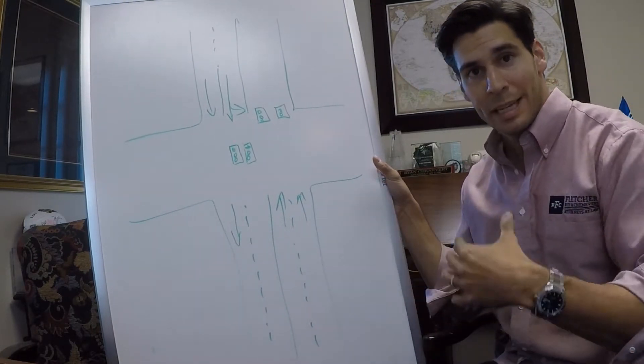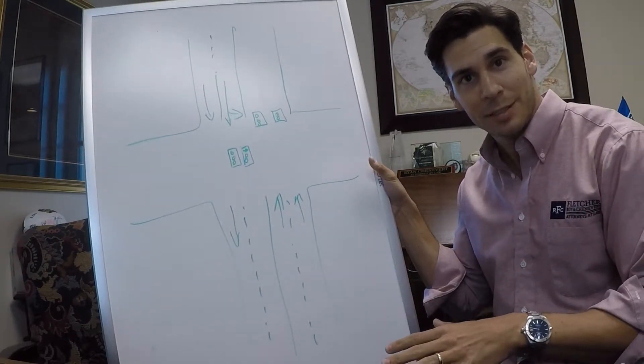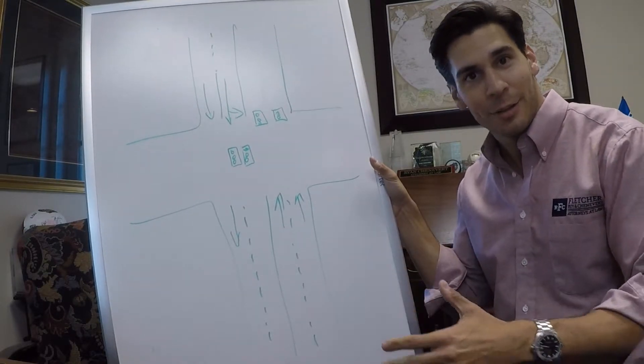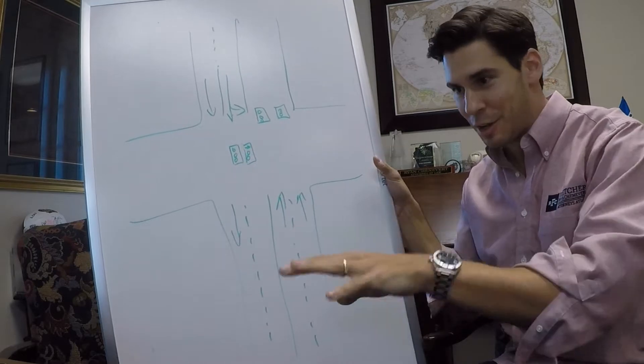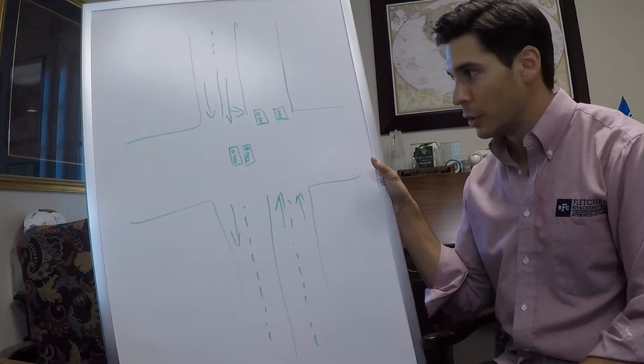So when we get it, it basically takes an engineering degree to decipher through these traffic sequence records that they send us. But I've looked at so many now that it comes very easy. Within seconds I can pinpoint exactly who had the green light and when.